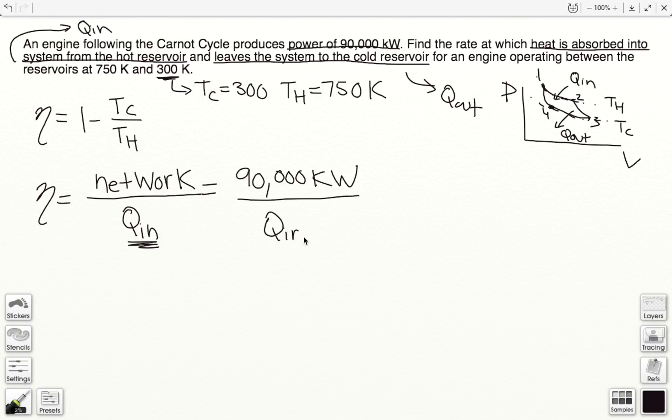We don't know the heat absorbed into the system from the hot reservoir, which is our Q_in. But we are given Tc and Th, so then we can find our efficiency.